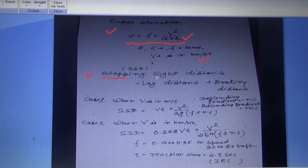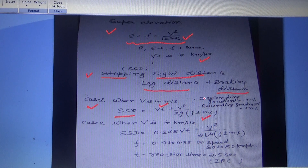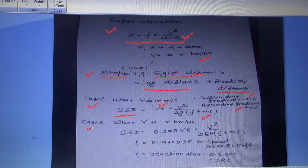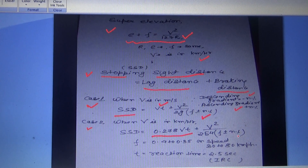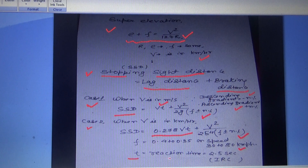Another important formula is stopping sight distance (SSD), which equals lag distance plus braking distance. When V is in m/s: SSD = VT + V² / (2gf ± n%), where +n% is for descending gradient and −n% for ascending gradient. When V is in km/h: SSD = 0.278VT + V² / (254(f ± n%)). Here f ranges from 0.4 to 0.35 depending on speed (32–80 km/h), and reaction time T = 2.5 seconds as per IRC.